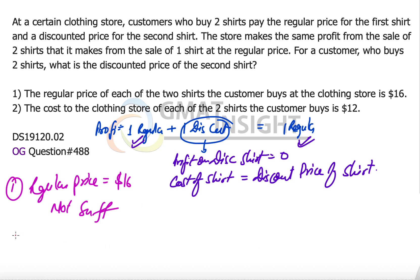Now let's look at the second statement, which says that the cost to the clothing store of each of the two shirts is equal to $12. So cost per shirt is equal to $12, and this is exactly what we wanted, because the cost per shirt is equal to the discounted price per shirt as well.